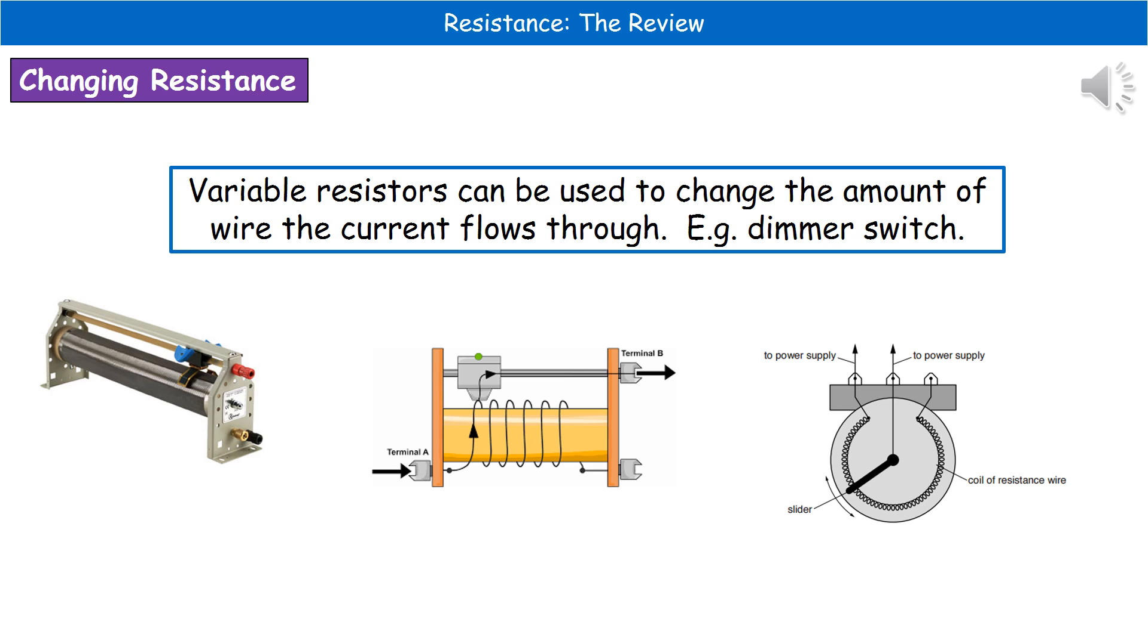I've given you three different little images. On the bottom left, that's actually the one you may well have used in the classroom. That is a variable resistor as you would see in the lab. The middle, we've got a little diagram showing us how it's going to work. You can see terminal A and terminal B will be where the connections are to the rest of the circuit.